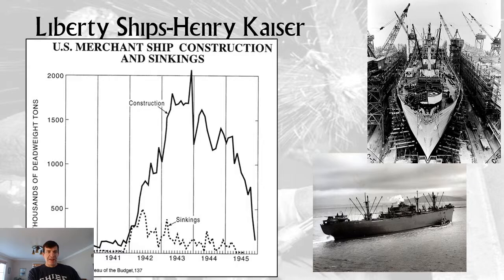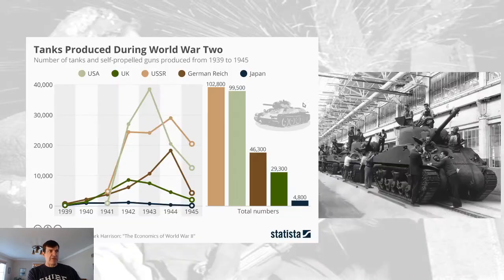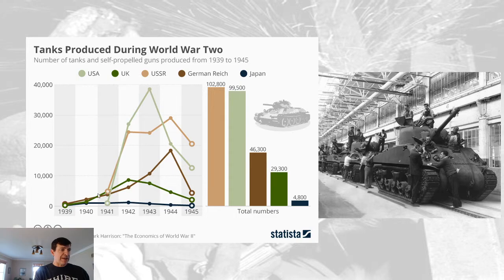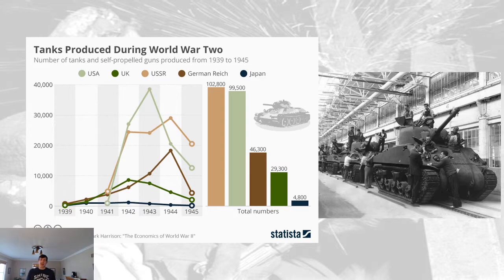Here's another example: the number of tanks. The US produced a huge amount of tanks. Even though US tanks were not comparable to German or Soviet tanks, sheer numbers would overwhelm the enemy. The Soviets made a lot of tanks. You'll notice German tank production was relatively low until 1944. The British basically used American tanks — they committed to making bombers instead.